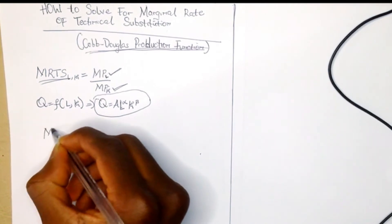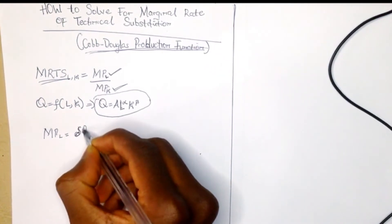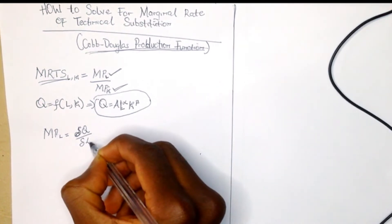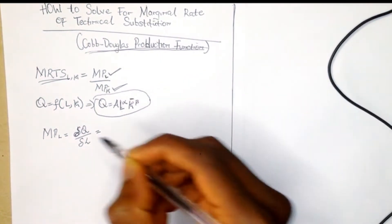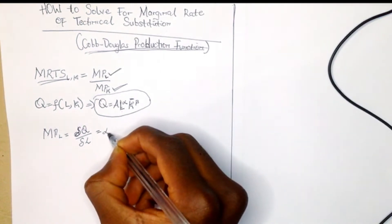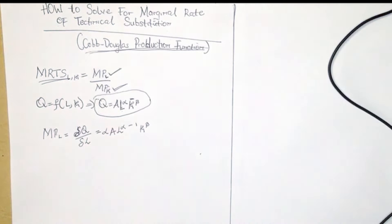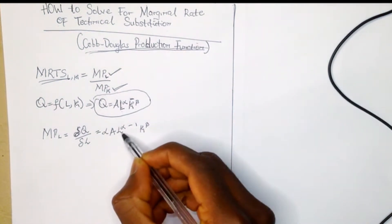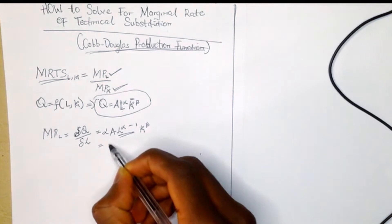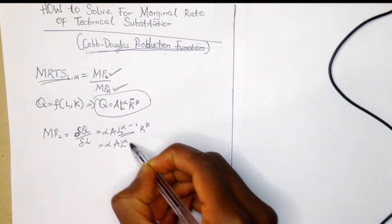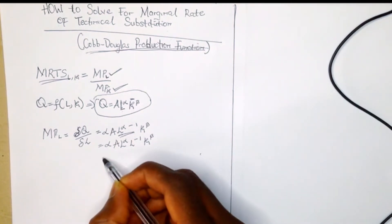To solve for the marginal product of labor, which is the partial derivative of Q with respect to L, we differentiate L and keep K constant. When we do that we have alpha times A times L^(alpha minus one) times K^beta. From there we can split up this L^(alpha minus one) to get alpha times A times L^alpha times L^(-1) times K^beta.